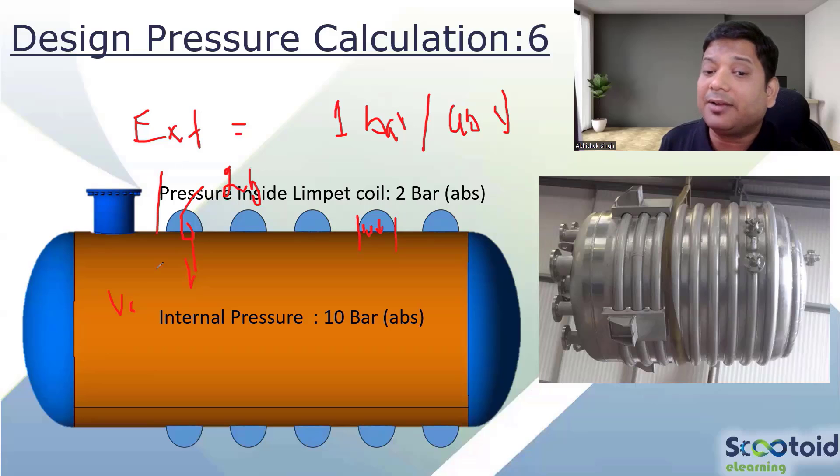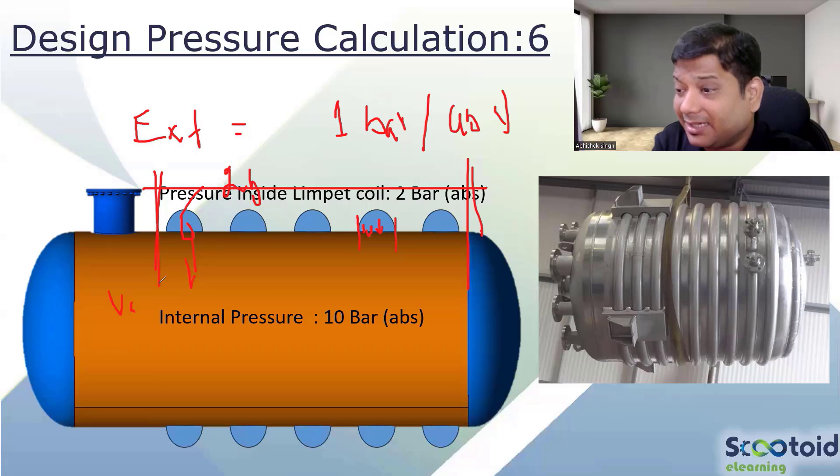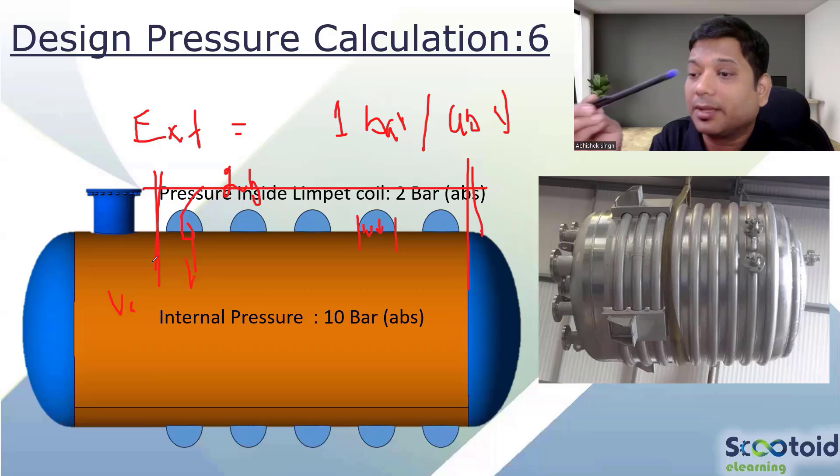You cannot accumulate - it is not creating the similar effect which will be there because of a jacket. If I have a jacket which is creating pressure on this complete length, it can create some buckling effect, right? So it is acting on the complete length.